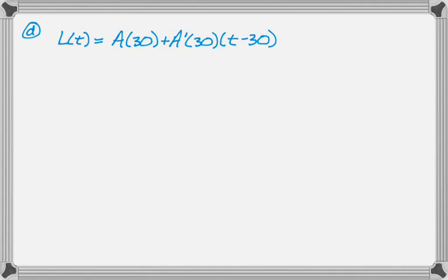I don't really even think you need to write out a numerical value, as long as you've written what I wrote there. But in case you're curious, I got L(t) equals 0.783 minus 0.056 times (t minus 30).